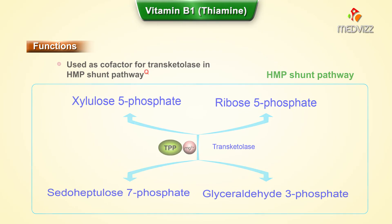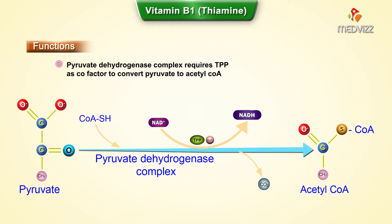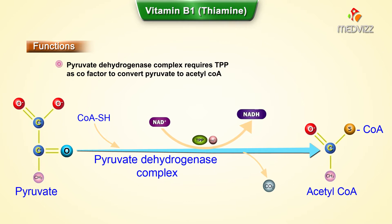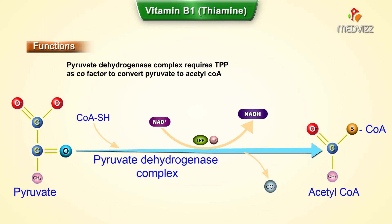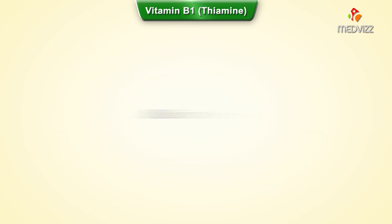Vitamin B1 is also required for the pyruvate dehydrogenase complex. Component E1 of the pyruvate dehydrogenase complex requires vitamin B1 as TPP, where pyruvate is converted into acetyl coenzyme A.